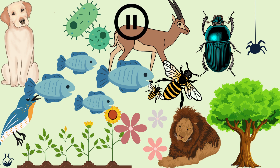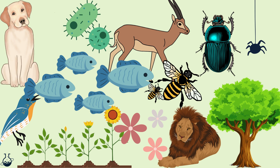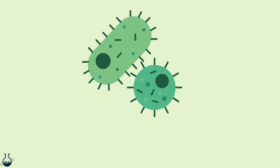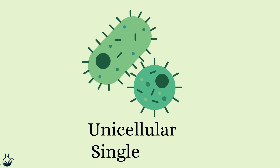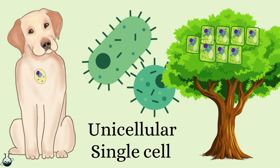Pause the video here and see if you can spot the simplest life form on the screen. Yes, these little things here — bacteria. Bacteria are forms of life and they come in a whole variety of types. They are unicellular organisms, meaning they are a single cell, unlike these life forms which are way more complex and made up of millions of cells.